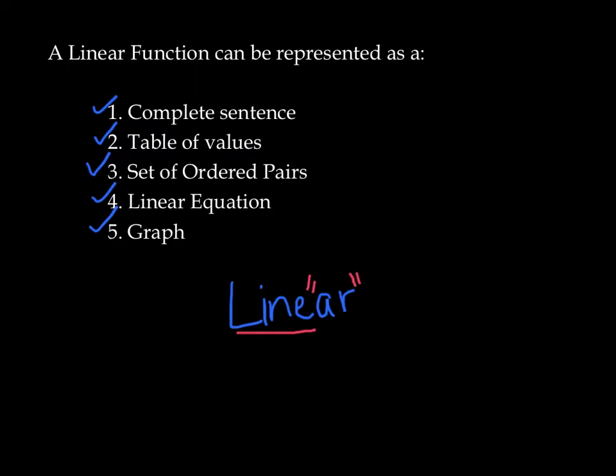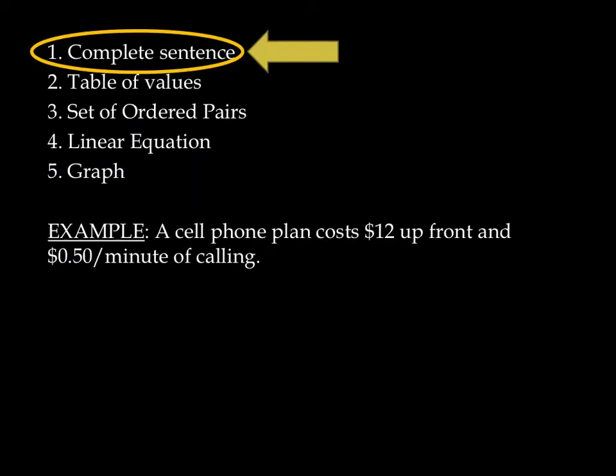So let's take a look at a few examples. In fact, this will be the only example we'll look at right here. A cell phone plan. And we'll write it as a complete sentence, table of values, etc. So first, as a complete sentence, here it is. A cell phone plan costs $12 up front and $0.50 per minute of calling.